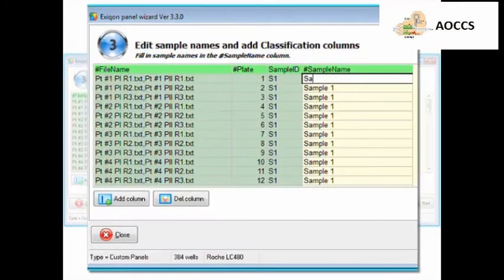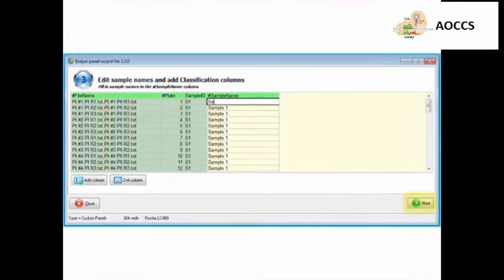The table generated after the file import contains predefined columns. Edit sample names, and add or remove classification columns at this step. Click Next when you're done, and save the data.